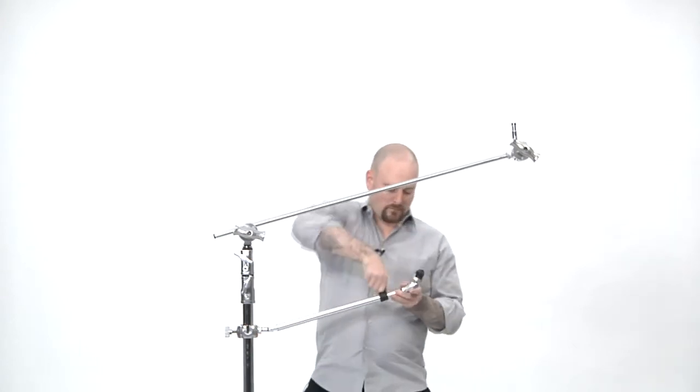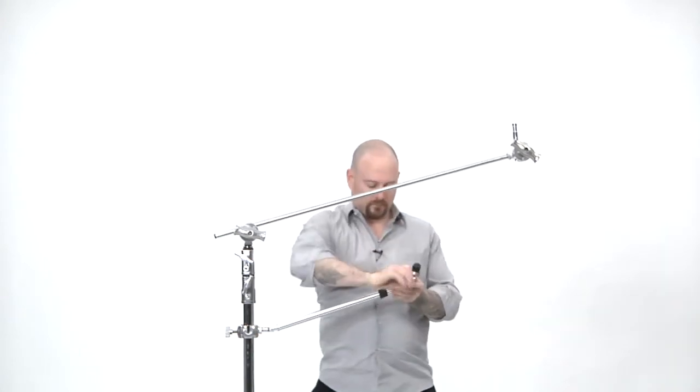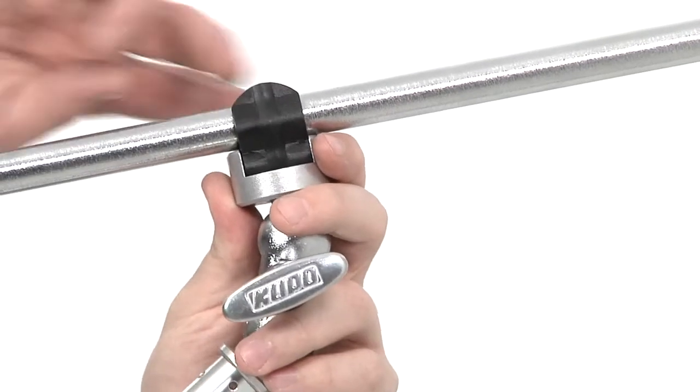On the other side of the Grip support arm, there is a built-in tiny clamp. Just place the tiny clamp around the grip arm and tighten the set screw until snug.